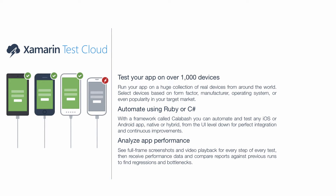The Samarine Test Cloud allows developers to test their apps on over a thousand devices. These are real devices from which they can select by manufacturer, operating system, or even popularity of their target market, and actually test their apps so they don't need to have so many devices available to know how it performs across different kinds of devices.